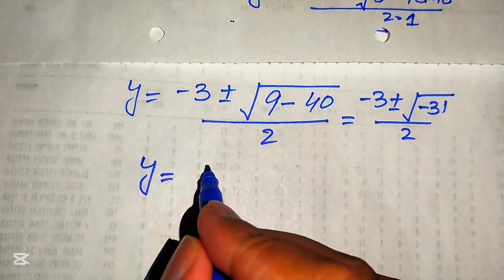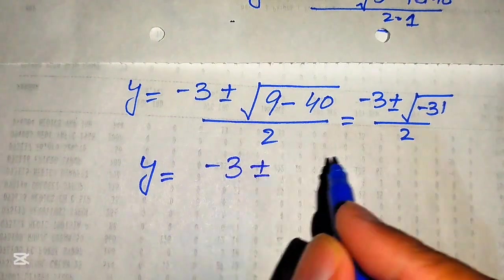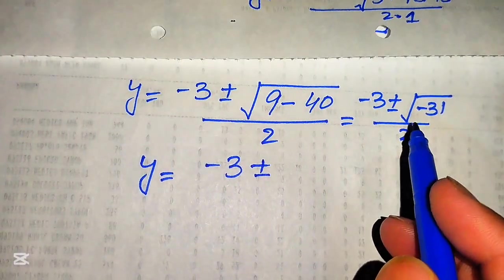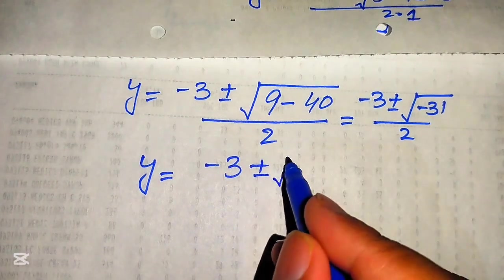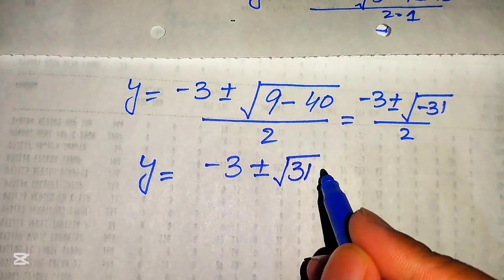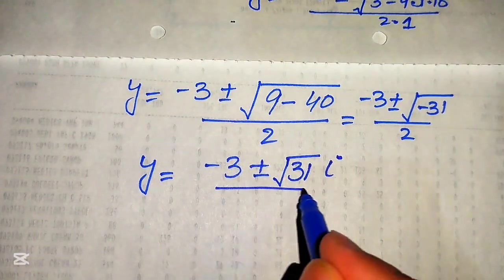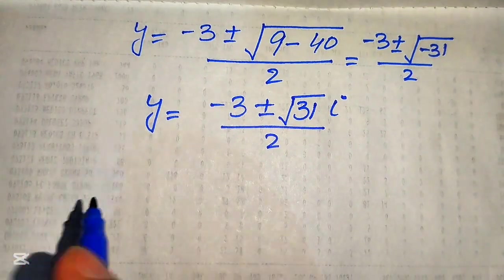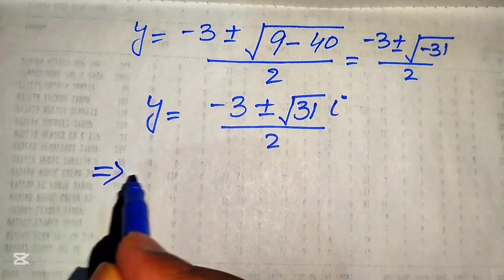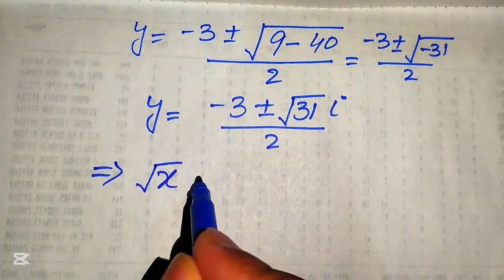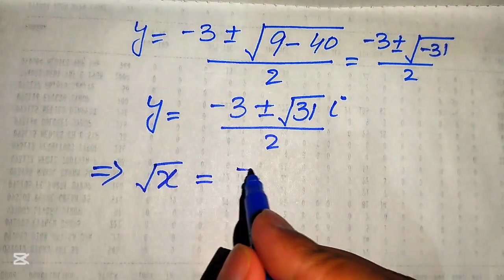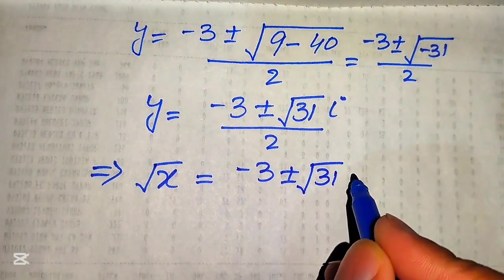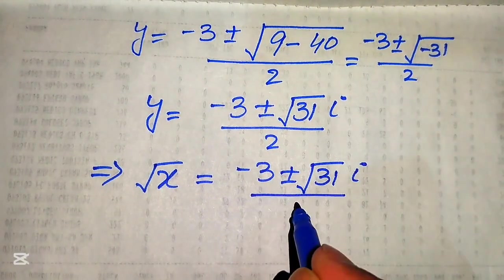Since a negative number appears inside the square root, we use the imaginary unit i. So √(−31) = i√31, giving y = (−3 ± i√31) / 2. Back-substituting y = √x, we get √x = (−3 ± i√31) / 2.